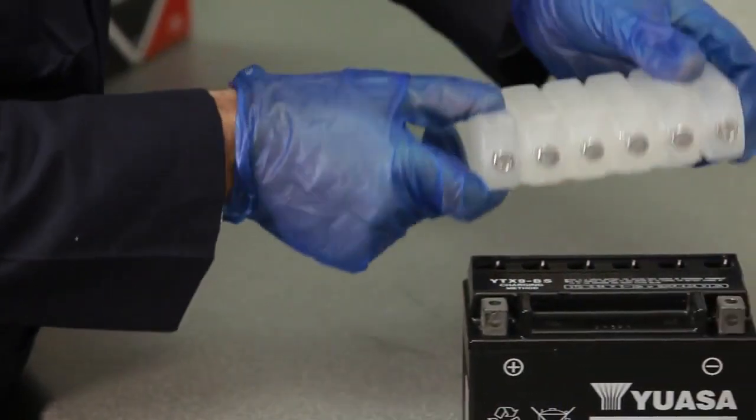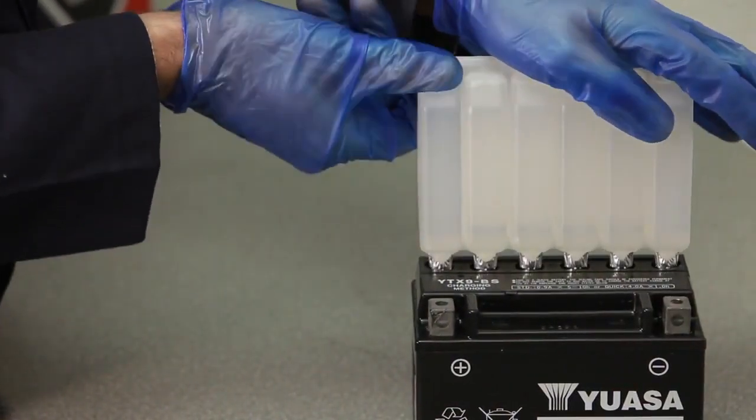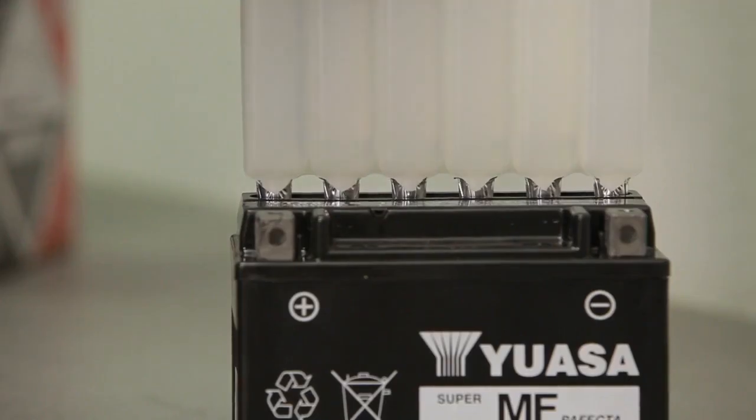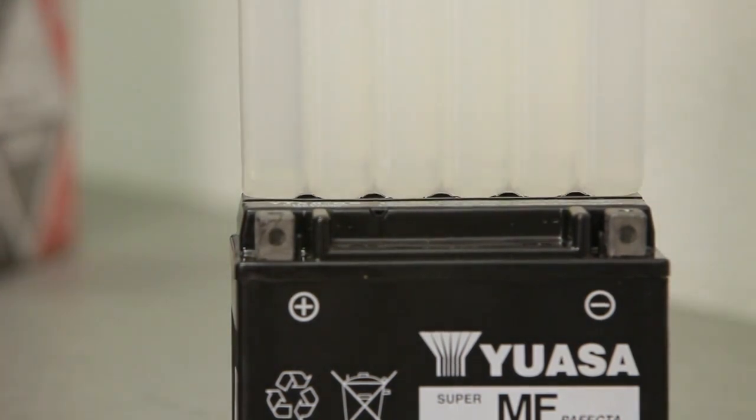The electrolyte container is made up of individual cells, each sealed at the top. Place it upside down into the filler ports of the battery. Ensure it's level and push it down to break the seals on the cells.